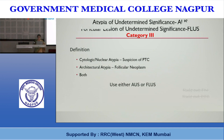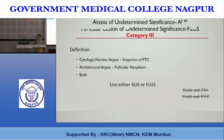Previously, when we saw cytologic atypia, we would write 'suspicious for papillary thyroid carcinoma,' or for architectural atypia, 'rule out follicular neoplasm.' Although this approach has the merit of directness, it is better to avoid such provocative descriptive language that has the potential to confuse clinicians and patients — they may just read 'rule out PTC' and begin workup in that manner.